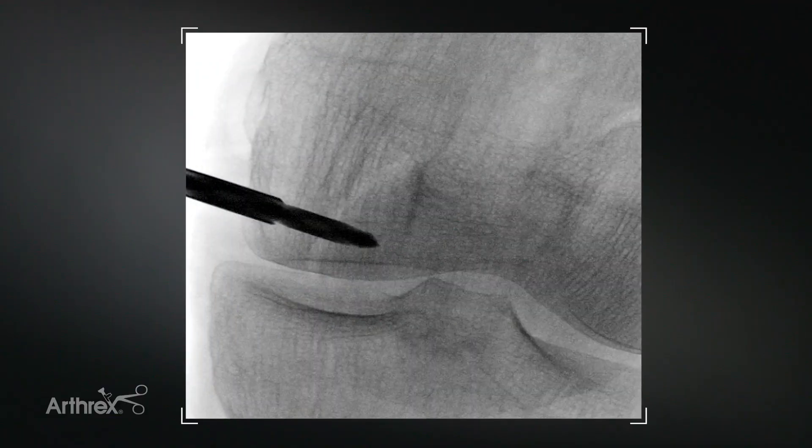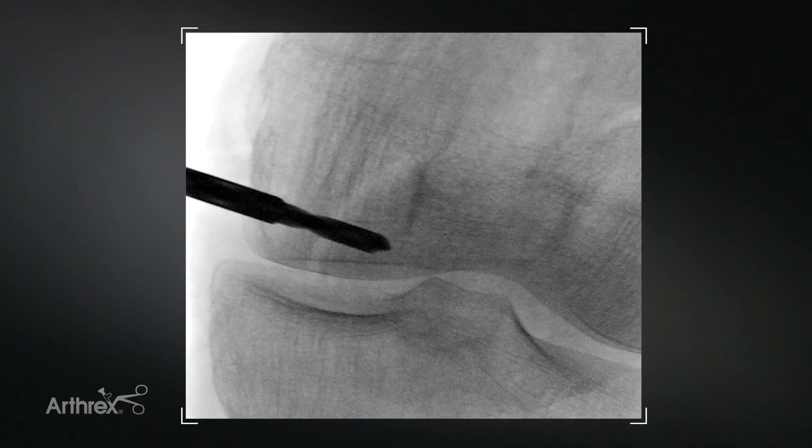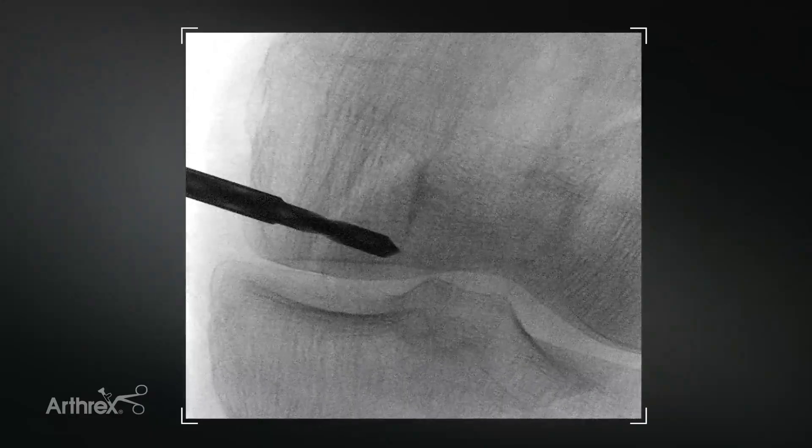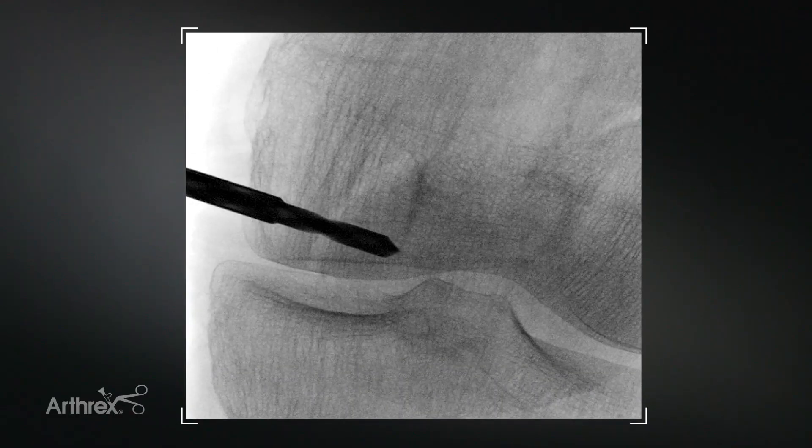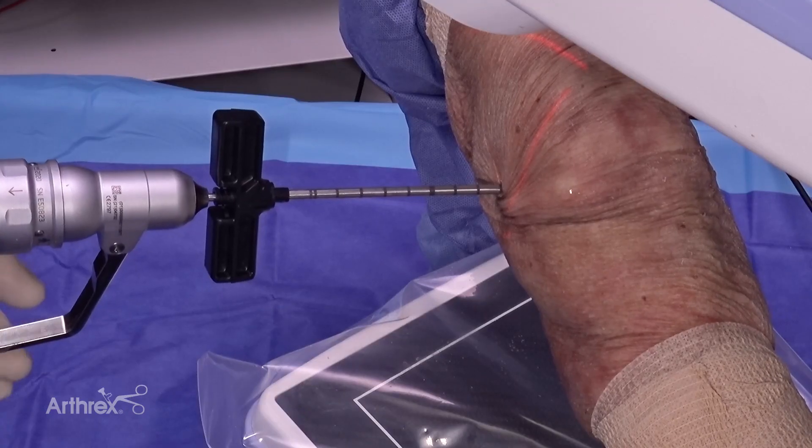We can just follow that with fluoro. You can see we're almost to, but not quite to, the lateral wall of the medial femoral condyle. So we can advance that just a little bit more. You can see we're pretty much right at it there. So that's really good. That'll be a nice spot. We've given ourself enough clearance here that we can do a seven millimeter decompression without violating the articular surface.